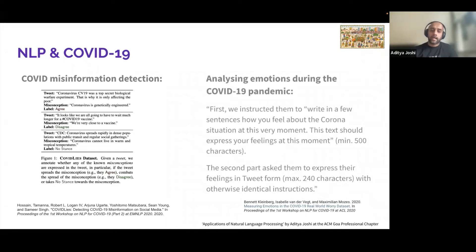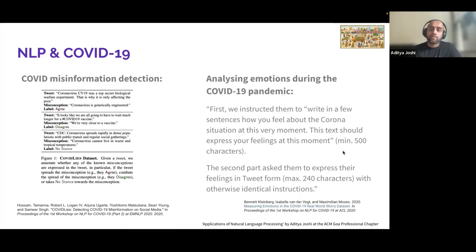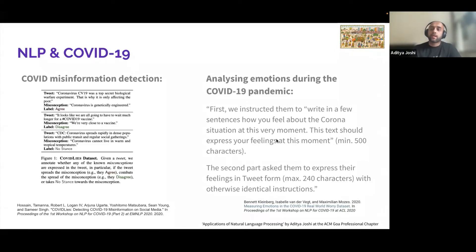The second kind of NLP and COVID-19 application is emotion detection. The COVID worry dataset was a popular dataset introduced during this period, containing two kinds of texts: long text of around 500 characters minimum, and short text of about 240 characters. These datasets allowed people to report how they were feeling during the pandemic. The COVID-19 Real World Worry dataset has been used in several works to understand the emotional impact of the pandemic on people around the world.